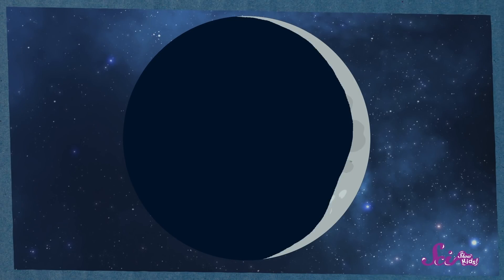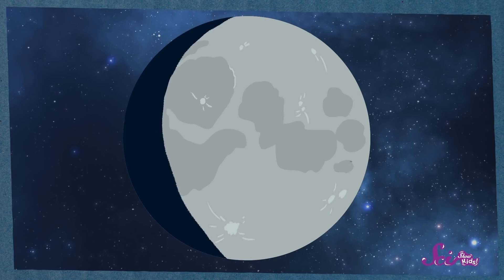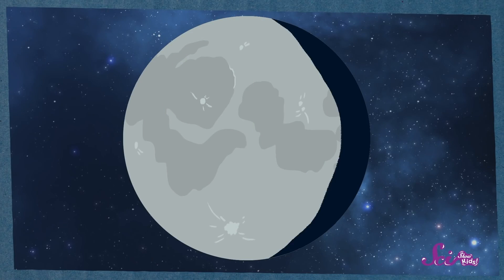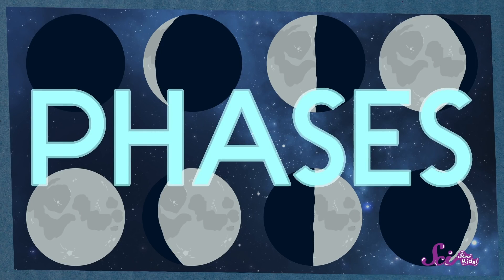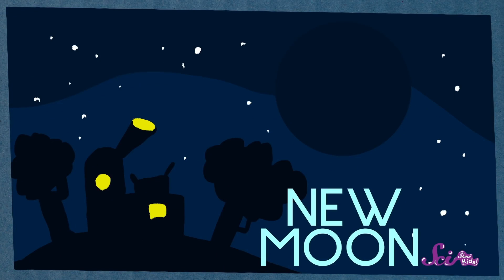It takes the Moon about one month to make one full orbit around the Earth. As it moves around our planet, the daytime side of the Moon — the side that's lit up from the Sun — is facing in different directions as we see it from Earth. This means that every night, we get a slightly different view of the Moon. During its month-long trip in orbit around the Earth, the bright part of the Moon appears to grow and then shrink from right to left.